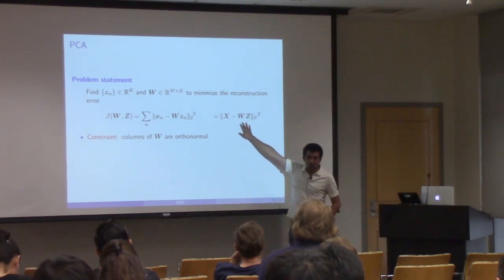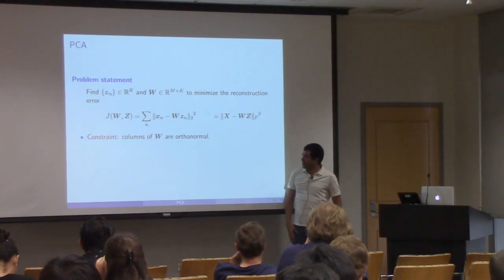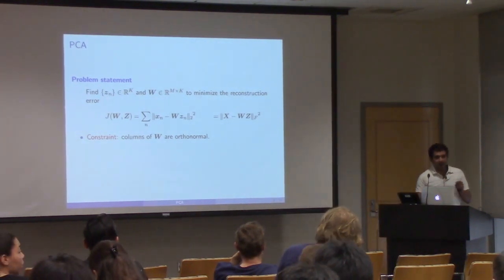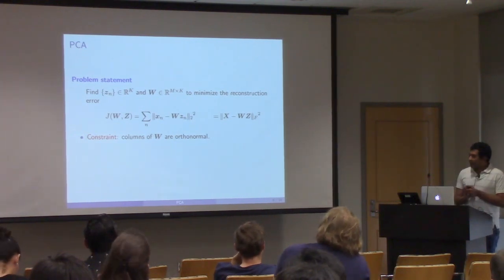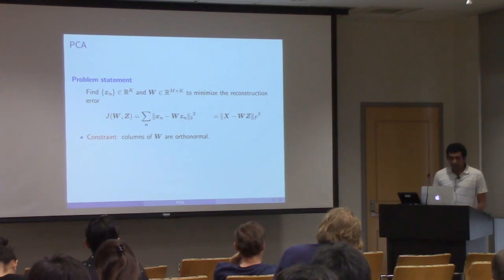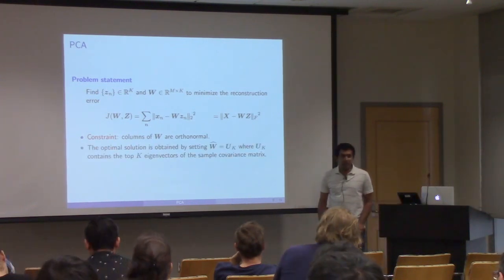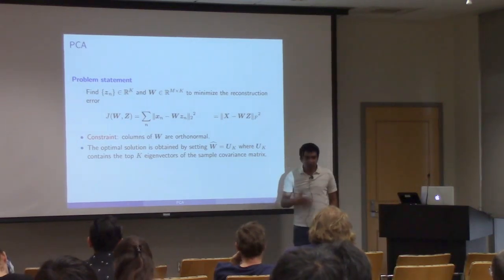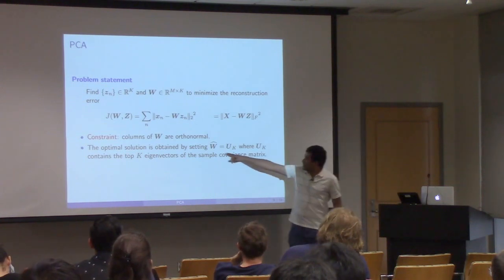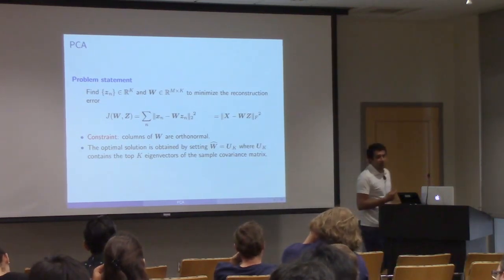This problem is not well posed — there are infinite solutions. To make this identifiable, we need constraints on w or z. A constraint that is often imposed and that leads to PCA is that the columns of w are orthonormal: inner products across different columns of w are 0, and each column with itself is 1. The solution can be computed in closed form via eigen decomposition: you take x, compute the sample covariance matrix, and set your subspace w to be the top k eigenvectors — meaning those associated with the largest eigenvalues.